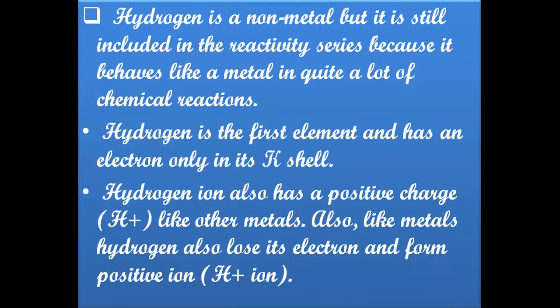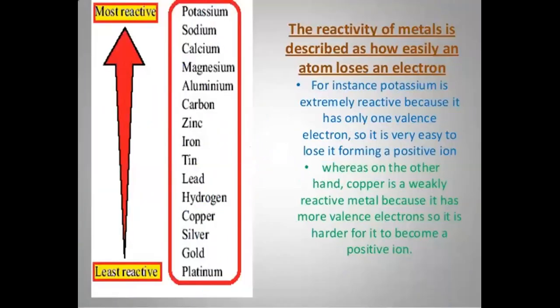Hydrogen is a non-metal but it is included in the reactivity series because it behaves like a metal in a unique way in quite a lot of chemical reactions. Hydrogen is the first element and has an electron only in its first shell, the K shell. Thus the hydrogen ion also has a positive charge like other metals. The reactivity of metals is described as how easily an atom loses an electron, and metals are arranged on the basis of the electrons lost from their atoms.